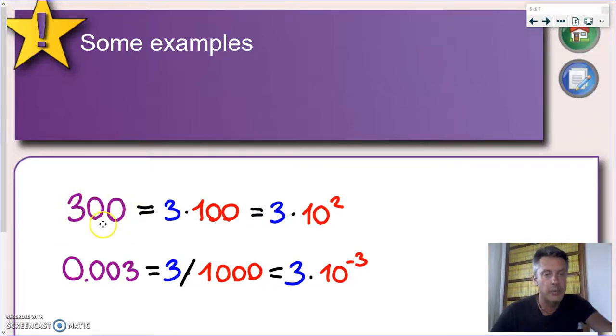Now 300 can be written as 3 times 100. And now, if you remember what we saw in the previous slide, 100 can be written as 10 to the power of 2. So 300 can be written as 3 times 10 to the power of 2.